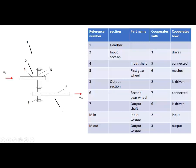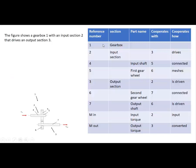So the robot would know: we have a gearbox. The gearbox has an input section which drives part number 3, the output section. And the output section cooperates with part number 2, the input section, and it is driven. The input torque M in cooperates with the input section and is input there, and the output torque M out cooperates with part number 3, the output section. Now we have everything together and we can start with our figure description. We start with sentence 1.